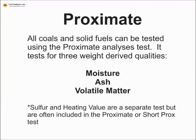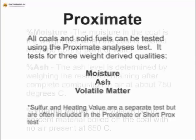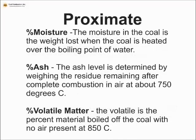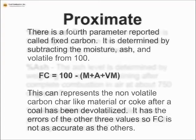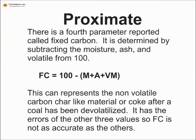If we read the standard, we'll see that we're going to be measuring the moisture, ash, and volatile matter in the coal. The sulfur and heating value are included in the short prox but will be discussed in a separate video. The proximate is basically a weight loss at different heating conditions. A fourth property, the fixed carbon, is measured by subtracting from 100 the moisture, ash, and volatile matter.